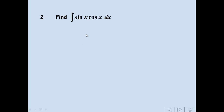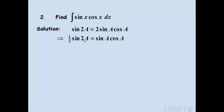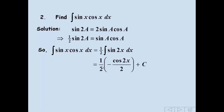For the second one, hopefully you worked out that it's the sine double angle we use. The sine double angle gives us 2sinA·cosA, which is very similar to sinx·cosx if we replace a with x — we've just got twice as many here. So if we halve that side, we use ½sin2x and integrate that. Sine integrates to minus cos and it's over 2, so we end up with this expression. And again, don't forget the plus c.